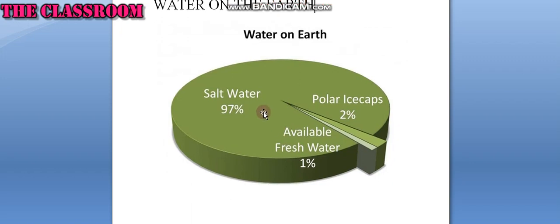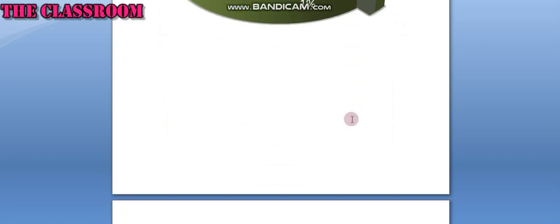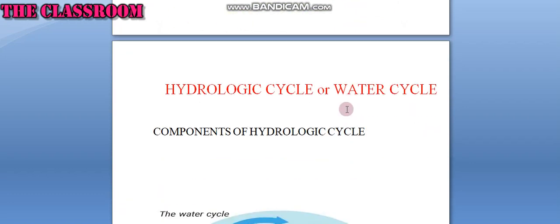Above 70% of the Earth's surface is covered by water. 97% is salt water, available fresh water is 1%, and polar ice caps are 2%. Hydrologic Cycle or Water Cycle.